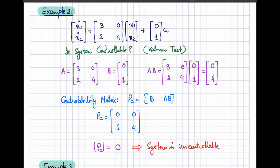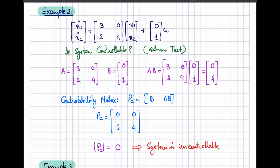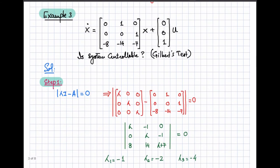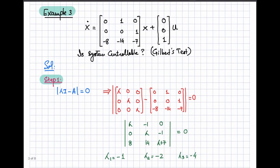Since the determinant is equal to zero, the system is uncontrollable. There is no unconstrained input that can change the state of this system in a finite amount of time. The determinant being zero confirms that this system is uncontrollable.